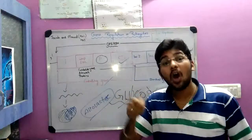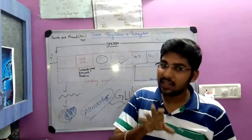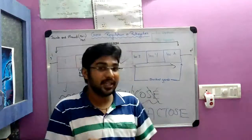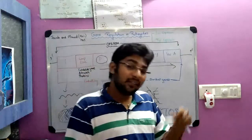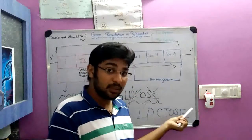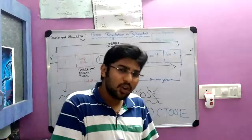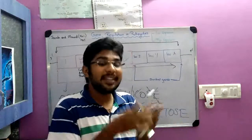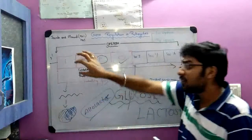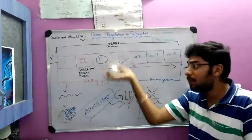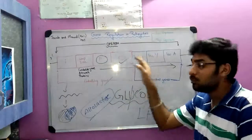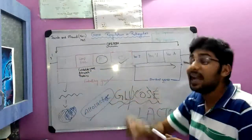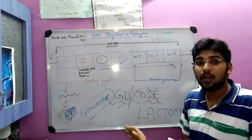This is called the switch-on mechanism. If glucose is absent and lactose is present, it is the switch-on mechanism. If glucose is present and lactose is absent, it is the switch-off mechanism. When lactose is present and glucose is absent, cAMP secondary messengers are produced, combine with CAP proteins to form the CAP-cAMP complex, bind to the CAP site, stabilize the RNA polymerase, and assist in initiating transcription, enhancing the production through this lac operon.